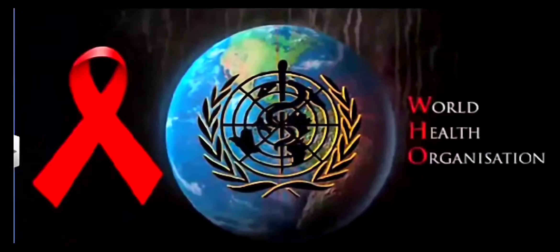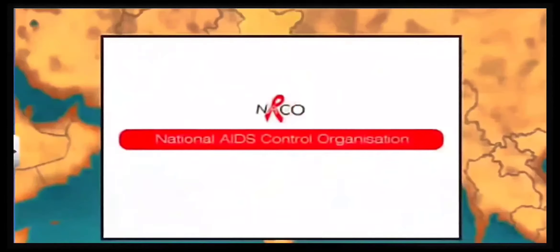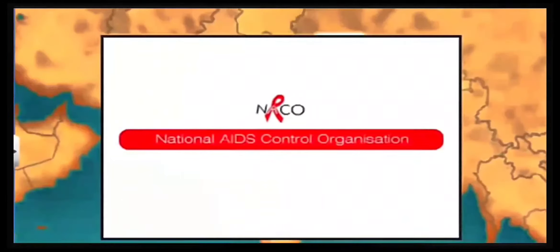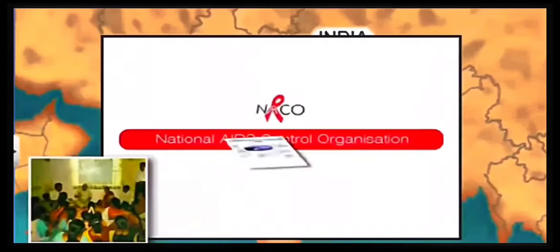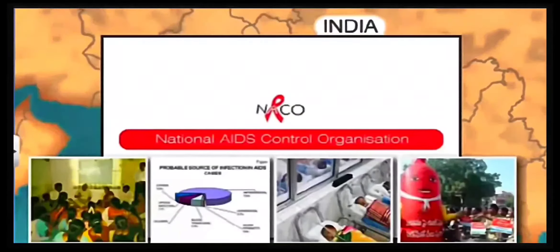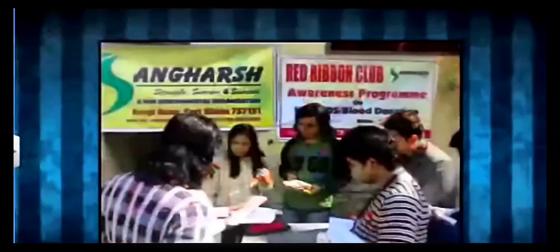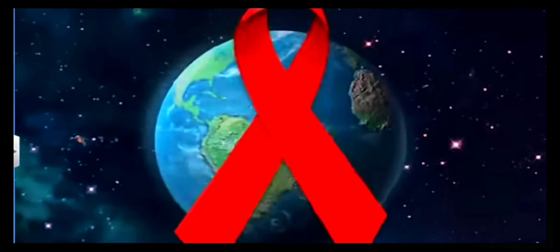WHO has taken up many efforts in this direction. Even in India, an organization named NACO — National AIDS Control Organization — is responsible for spreading awareness about this disease, making people know that there is no cure for this disease and that only prevention is the way to stop AIDS. The 1st of December is considered World AIDS Day, on which WHO, NACO, and other organizations make people aware of the severity of this disease so that people can protect themselves from it.